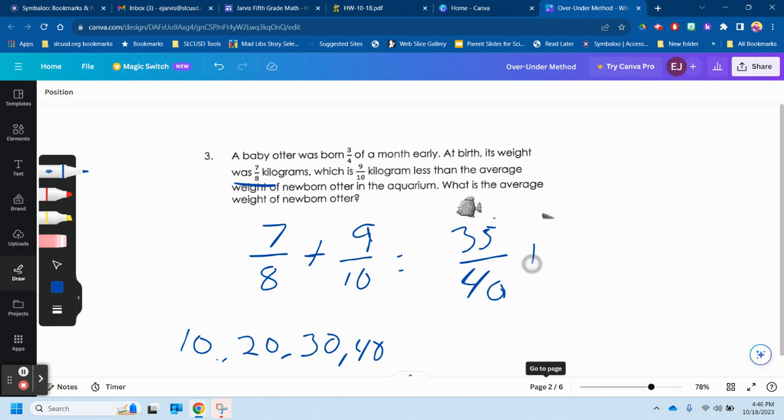Plus, so what do I multiply the 10 by to get 40? I multiply it by four. So I multiplied 10 by four. I also multiply the nine by four. I get 36.